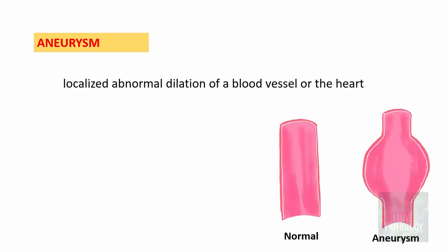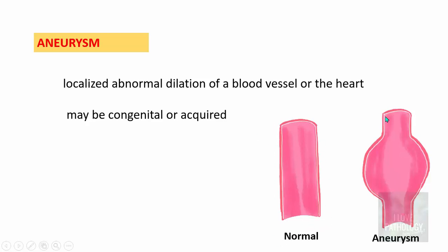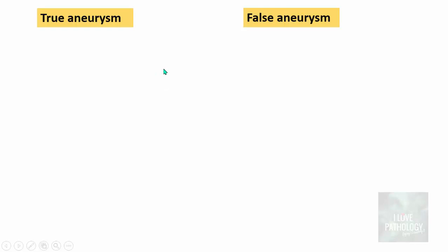What is an aneurysm? Aneurysm is a localized abnormal dilatation of the blood vessel or the heart, which may be congenital or acquired. This is a normal caliber of a blood vessel — a cut section — whereas this is the abnormal dilation of the blood vessel. That's aneurysm.